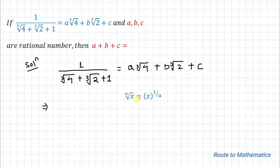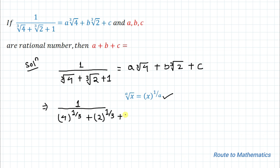In the next step we are going to apply the exponential law: x-th root of a equals a to the power 1 by x. By applying this power rule we can write the equation as 1 divided by (4 to the power 1 by 3 plus 2 to the power 1 by 3 plus 1), equals a multiplied with 4 to the power 1 by 3 plus b multiplied with 2 to the power 1 by 3 plus c.